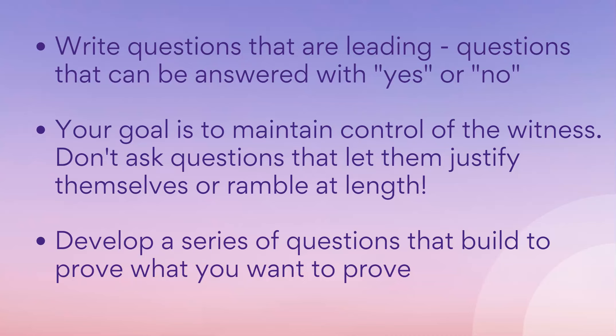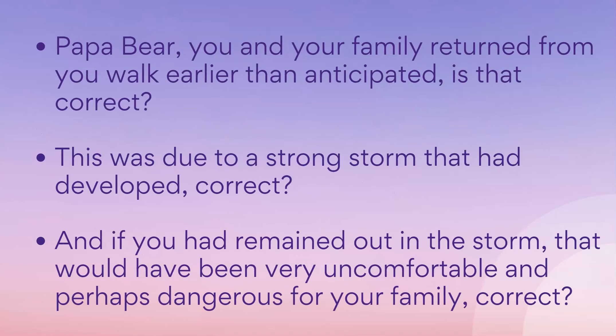Here's an example line of questioning for Papa Bear: 'Papa Bear, you and your family returned from your walk earlier than anticipated — is that correct?' Yes. 'And this was due to a strong storm that had developed, correct?' Yes. 'And if you had remained out in the storm, that would have been very uncomfortable and perhaps even dangerous for your family, correct?' Yes. Through this line of questioning, I'm forcing him to acknowledge the storm was dangerous, which helps my necessity defense for Goldilocks, since she would have faced the same situation.